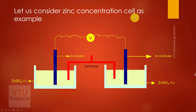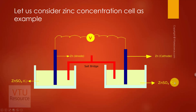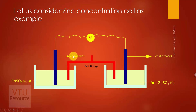As an example, let us consider a zinc concentration cell. A zinc rod is immersed in a zinc sulphate solution of concentration C1. Again, a zinc rod is immersed in a zinc sulphate solution of concentration C2. Both are coupled through a salt bridge and connected by a voltmeter. Since zinc sulphate of concentration C1 is the lower concentration electrolyte, it acts as the anode as per IUPAC, and zinc sulphate of concentration C2, being the higher concentration, acts as the cathode.